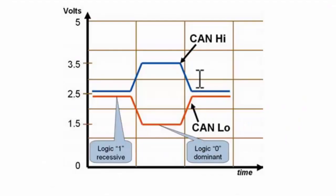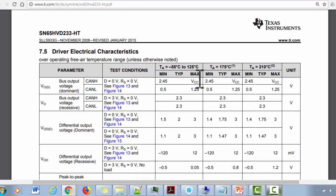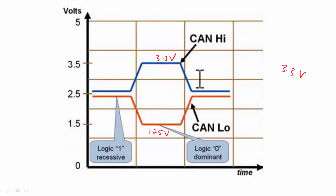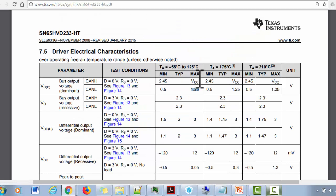So in our case, if you apply 3.3V to the transceiver, the dominant state will be 3.3V on CAN-High and 1.25V on CAN-Low (not 1.5V — the datasheet says 1.25V), and the recessive state will be 2.3V on both. Remember, you don't have to use this specific transceiver — NXP and other vendors produce transceivers too, and the operation will be the same though voltage ranges may differ. For this TI transceiver, don't supply more than 3.3V.